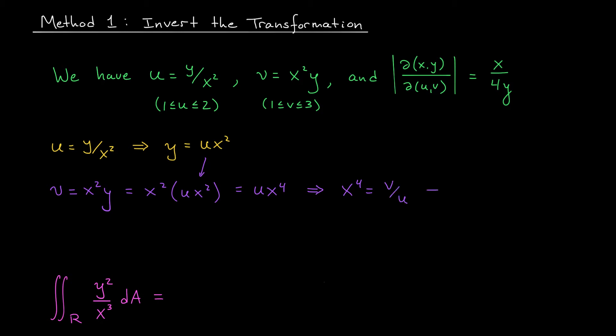And now I can take the 4th root of both sides to get x equals the 4th root of v over u. Now I know what you're probably thinking. Zach, isn't it dangerous to divide by u here? What if we're accidentally dividing by 0? Well, don't worry, we're not. u is between 1 and 2. There's no danger here.